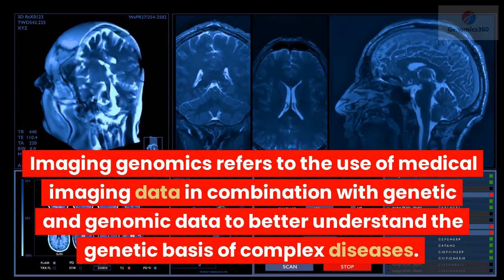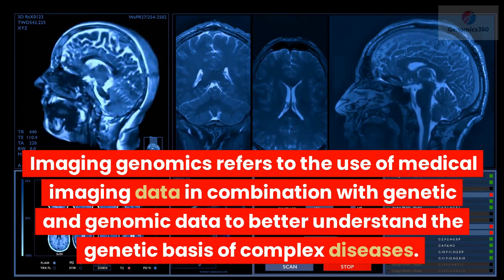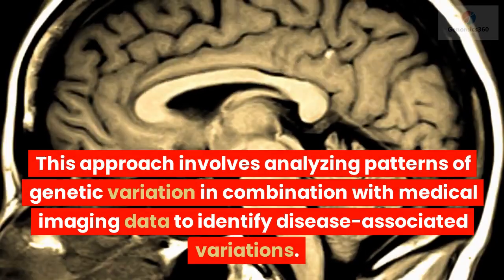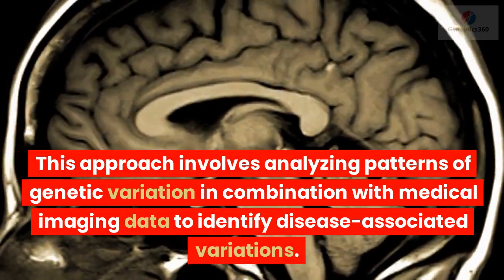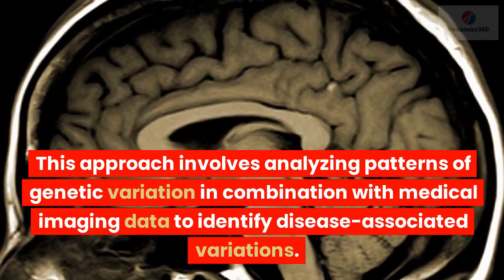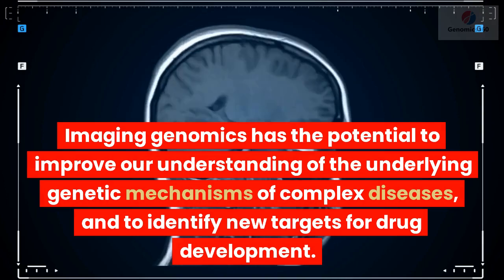Imaging Genomics refers to the use of medical imaging data in combination with genetic and genomic data to better understand the genetic basis of complex diseases. This approach involves analyzing patterns of genetic variation in combination with medical imaging data to identify disease-associated variations. Imaging Genomics has the potential to improve our understanding of the underlying genetic mechanisms of complex diseases and to identify new targets for drug development.